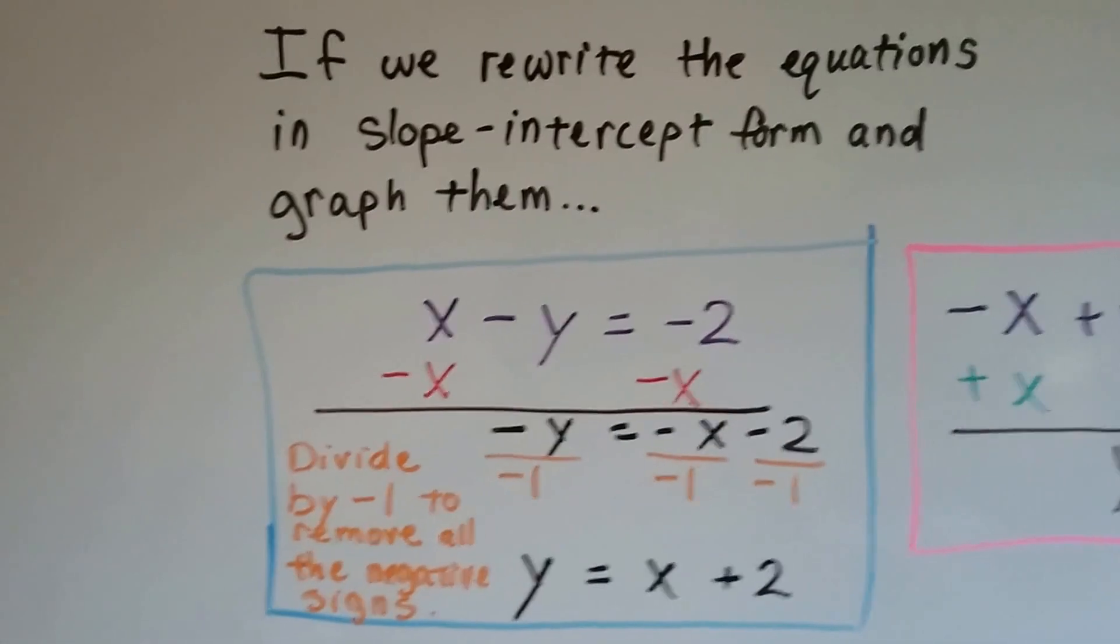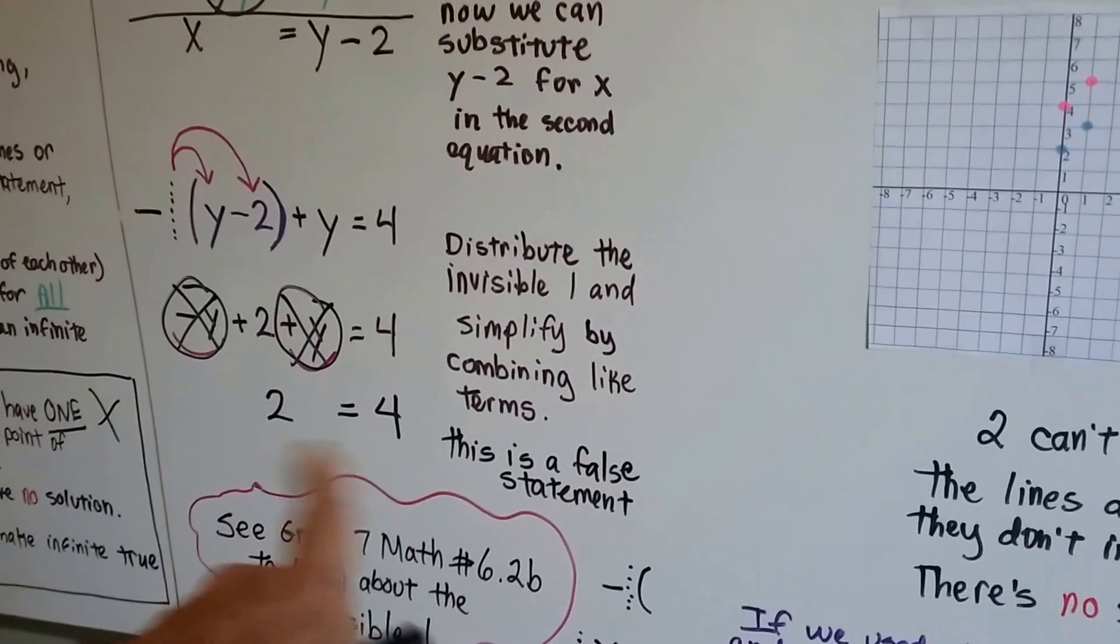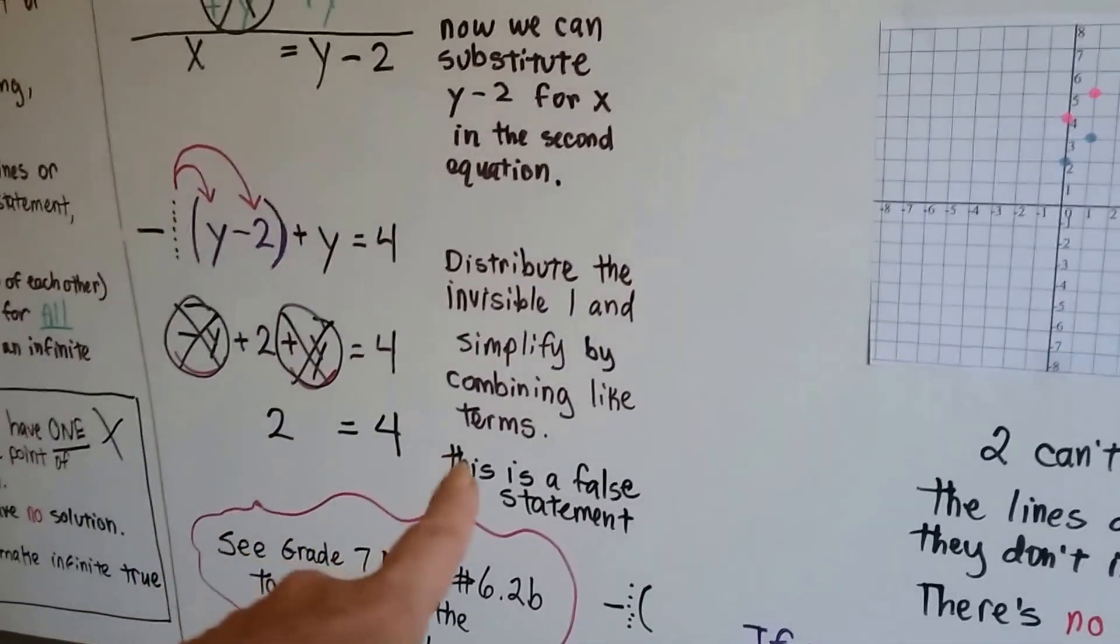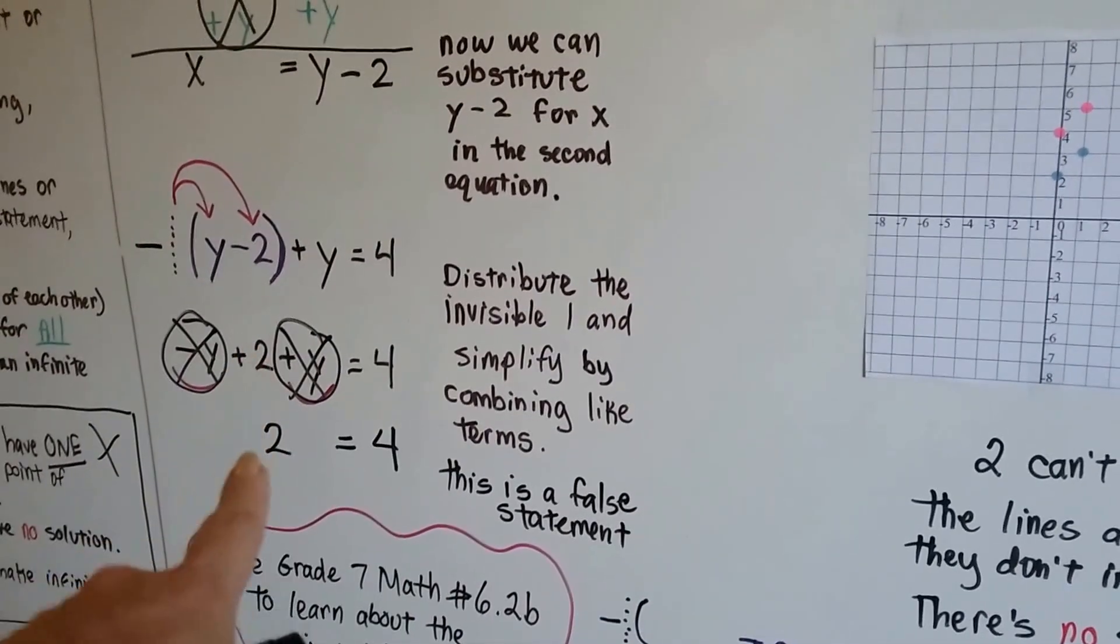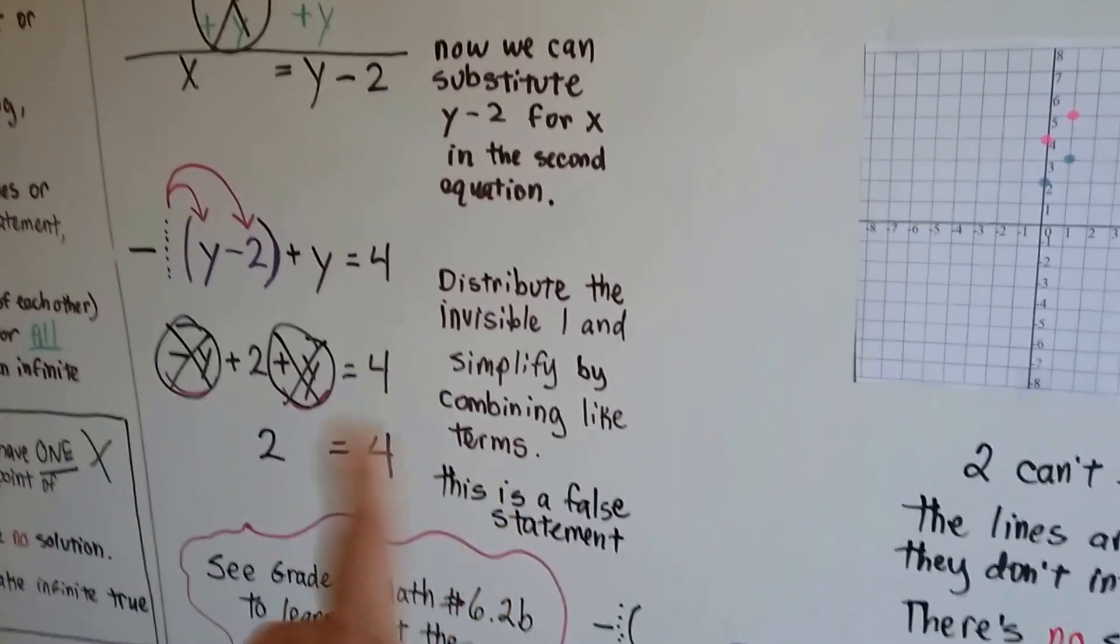So now we can rewrite the equations. Well, first of all, it was a false statement. It came out that 2 equals 4. We've got 2 equals 4, and that can't be true, right?